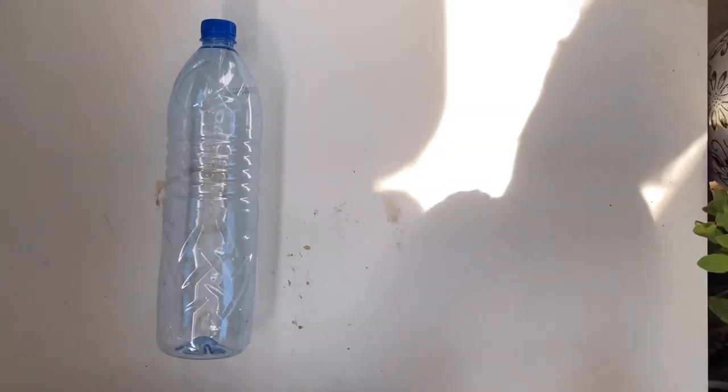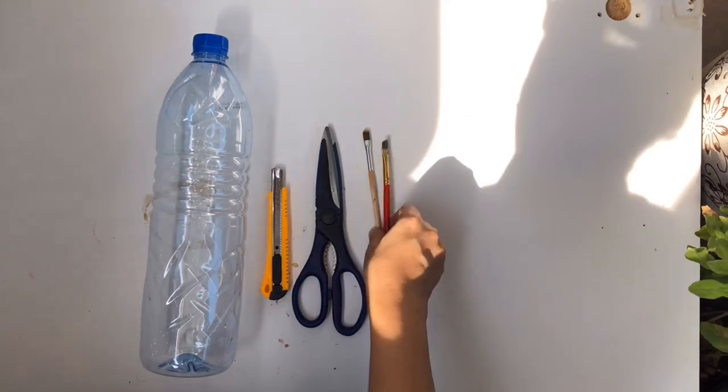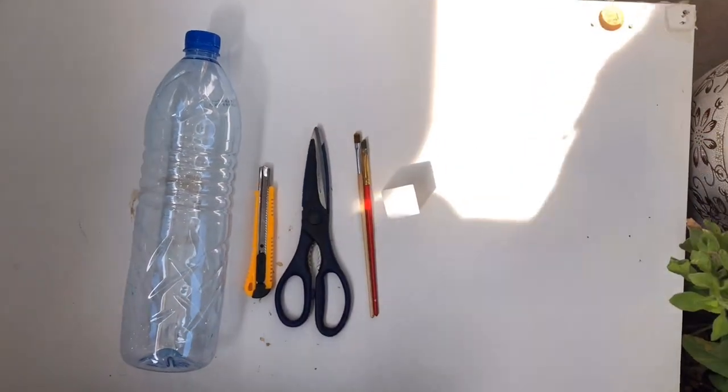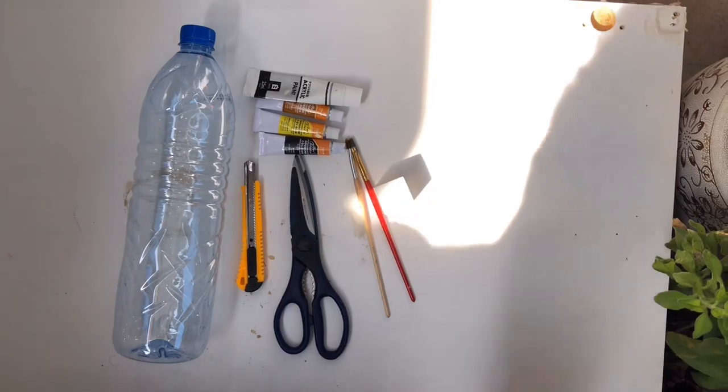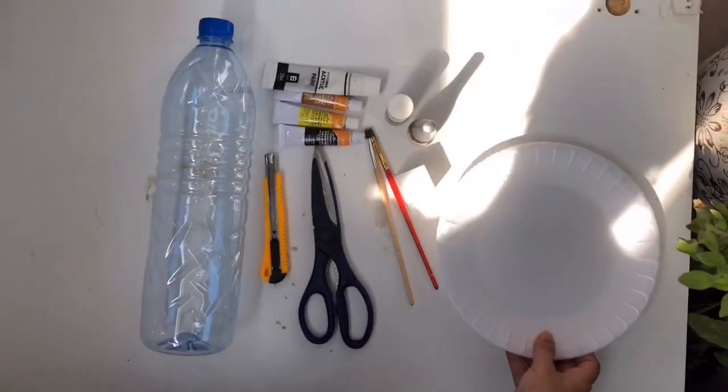Here's what you'll need: a plastic bottle, a utility knife, a pair of scissors, some paint brushes, a piece of sponge, some paints, some old nail polishes, and a disposable plate.